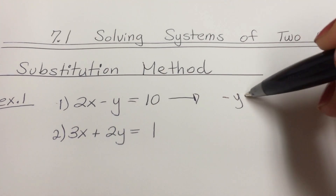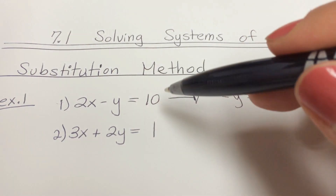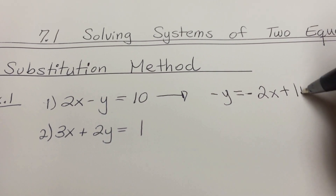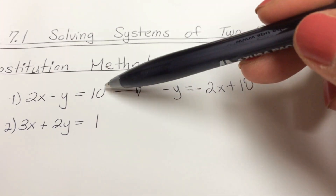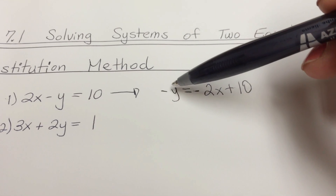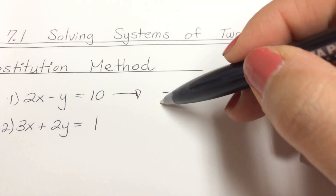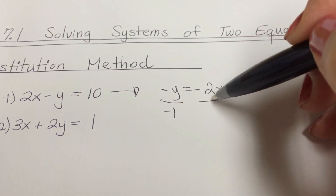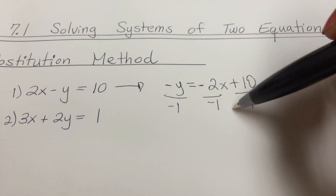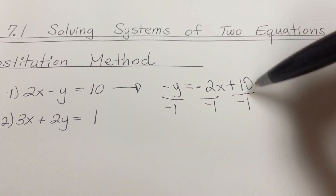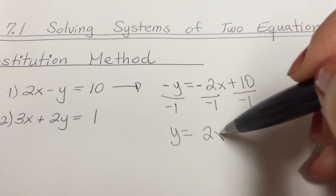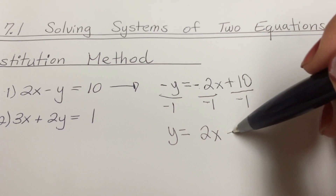We're going to take equation number 1 and manipulate it so we get y by itself, then substitute it into equation number 2. So we get negative y equals negative 2x plus 10 — it's plus 10 because this is a positive 10. To get rid of the negative in front of y, divide by negative 1 through all of it. So y equals positive 2x minus 10.